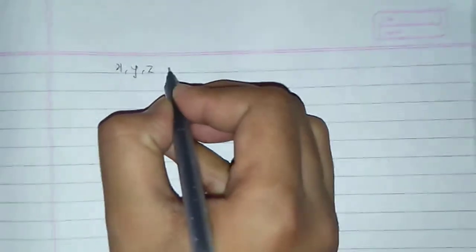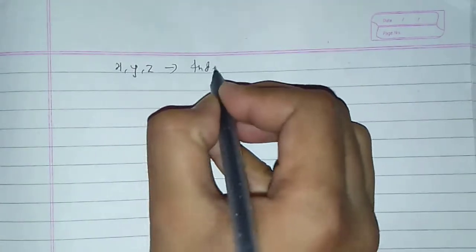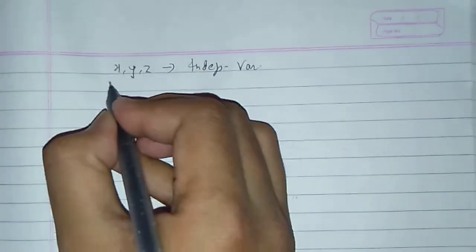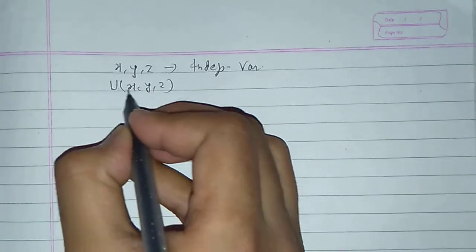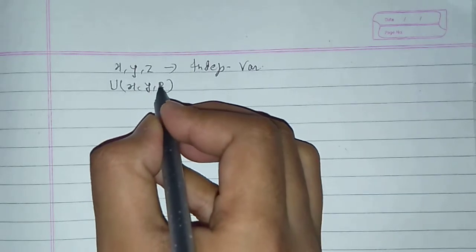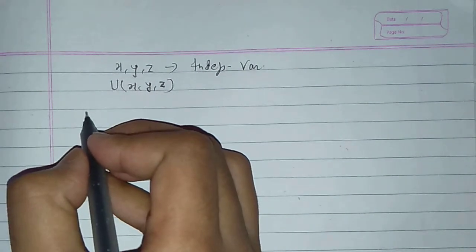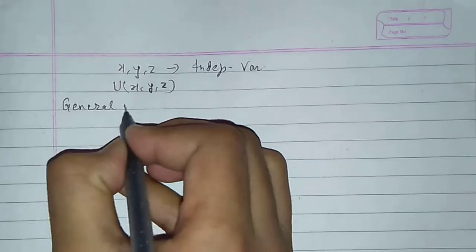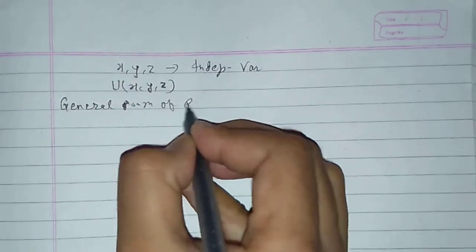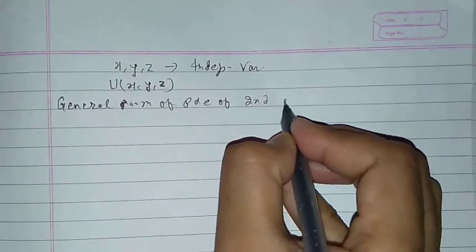Hello guys, welcome to my channel. In this lecture I am going to teach about classification of partial differential equations of second order in three independent variables. Suppose x, y, and z are three independent variables and u is a dependent variable upon these three independent variables. First we write the general form of PDE of second order.